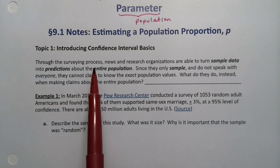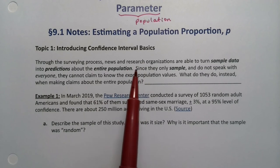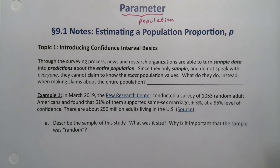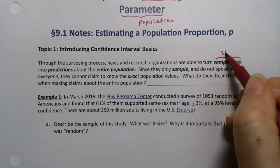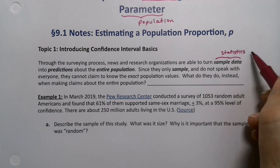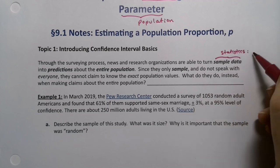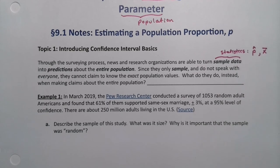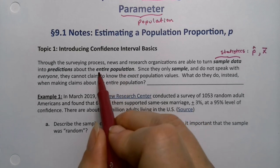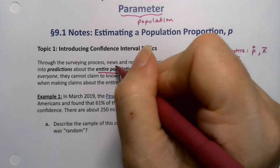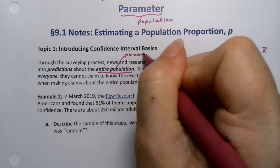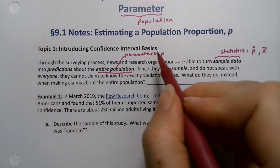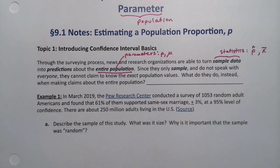Through the surveying process, news and research organizations are able to turn sample data into predictions about the entire population. They're able to take statistics, P hat and X bar, and make predictions about that entire population, the parameters P and mu.